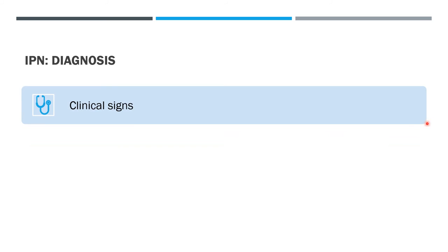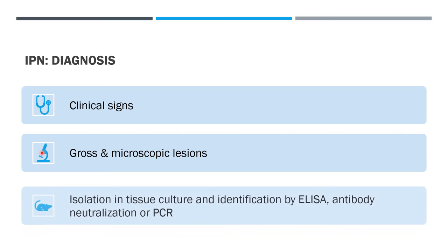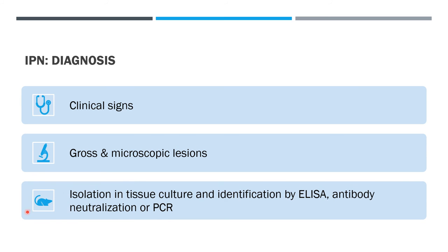For the diagnosis, this is based on clinical signs, gross and microscopic lesions. For confirmatory diagnosis, isolation in tissue culture and identification by ELISA, antibody neutralization, or polymerase chain reaction is used.